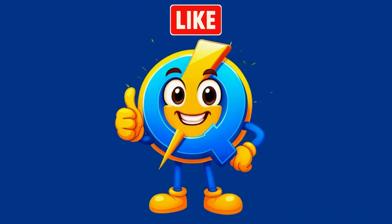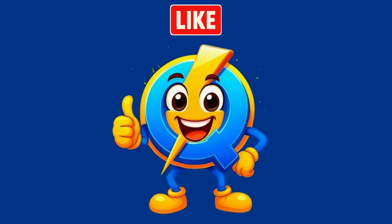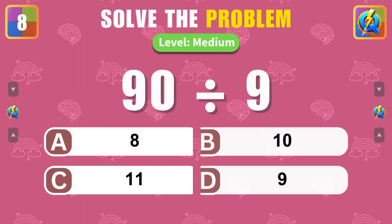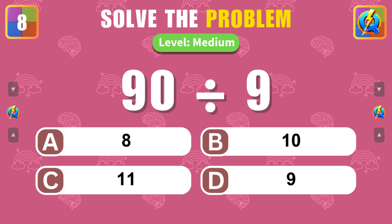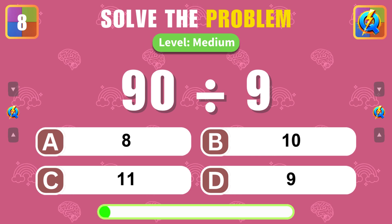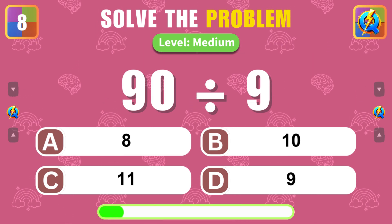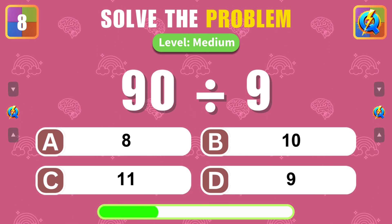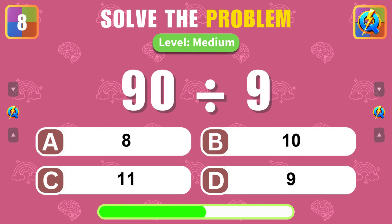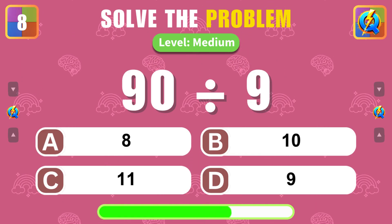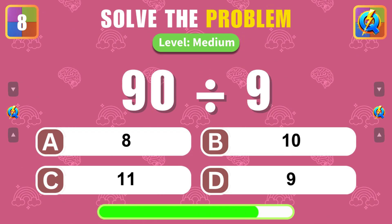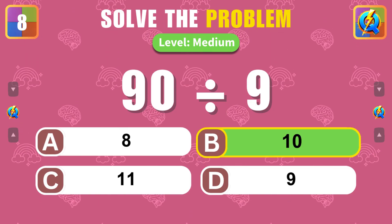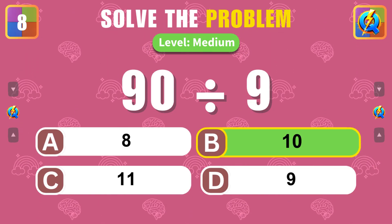If you're enjoying this quiz, smash that like button. What is the result of 90 divided by 9? Spot on! The answer is 10.